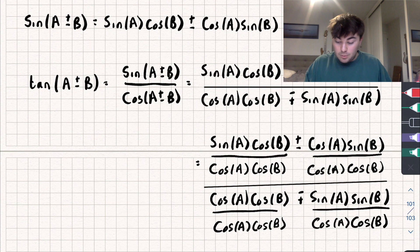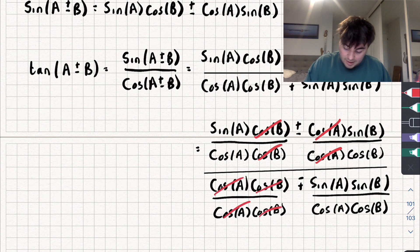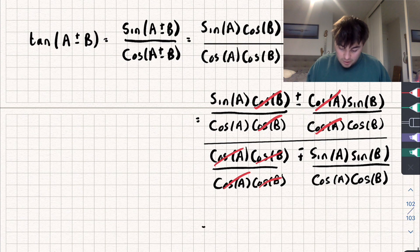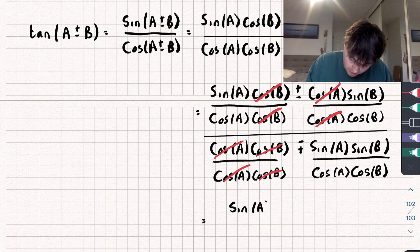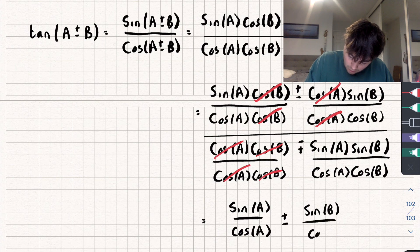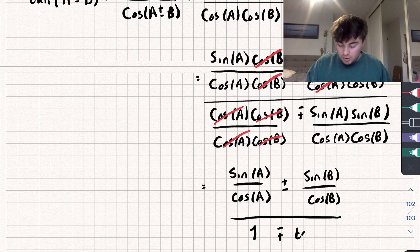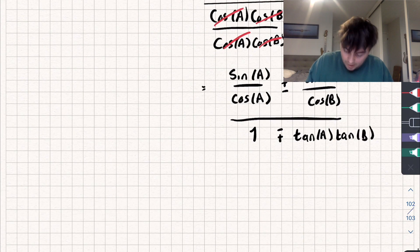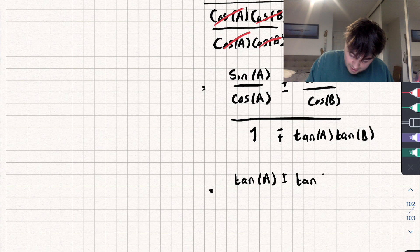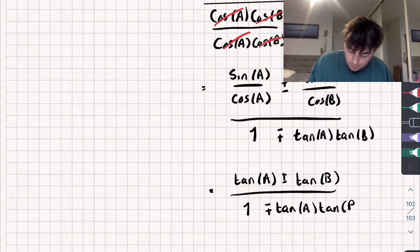After simplifying, things cancel out. We get sine of A over cosine of A plus or minus sine of B over cosine of B, all divided by one minus or plus sine of A over cosine of A multiplied by sine of B over cosine of B. And since sine over cosine is tan, we get tan of A plus or minus tan of B, all divided by one minus or plus tan of A tan of B.